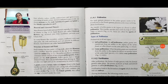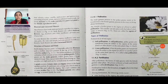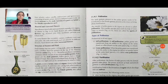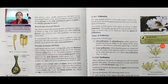Bisexual and unisexual flowers: most flowers have both male and female reproductive organs as shown in figures 11.10, 11.11, and 11.12. Flowers which have both male and female reproductive organs are called bisexual flowers. For example, mustard, pea, and rose are examples of bisexual flowers.